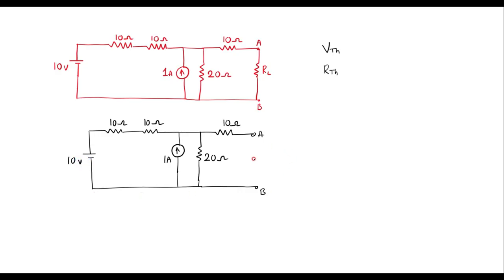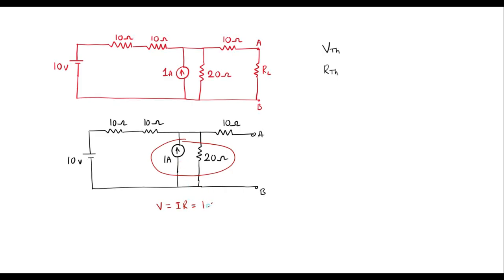Now we need to calculate the voltage between terminal A and B. That voltage is known as Thevenin's voltage, represented as VTH. Before calculating VTH, I will try to reduce this circuit further. Here we can observe that there is a current source in parallel with a resistor of 20 ohm. I will convert this current source and this resistor into a voltage source. To convert, we know that V equals IR. The current value is 1 amp and the resistor value is 20 ohm, so the equivalent voltage source value is 20 volts.